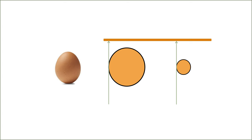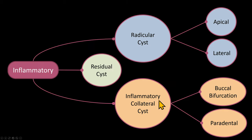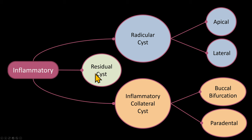With this foundation, let's proceed to learn about different kinds of cysts. We may divide cysts into three broad categories: inflammatory, developmental, and other lesions that look like a cyst. There are three broad types of inflammatory cysts. The first is a radicular cyst, which can be either an apical cyst or a lateral cyst arising from an accessory pulp canal. We may also have a residual cyst — most commonly a residual radicular cyst — where a tooth is missing and the radicular cyst remains.